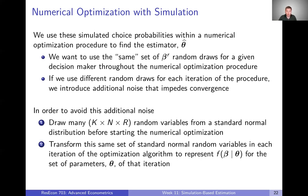To avoid this extra noise that impedes convergence, we need to draw many random variables from a standard normal distribution before even starting our numerical optimization procedure. Specifically, we need K times N times R draws: K random coefficients, drawn separately for each of our N decision-makers, with R simulation draws per decision-maker. Within each iteration, we can take those standard normal random variables and transform them into a different distribution to represent the actual distribution of betas.